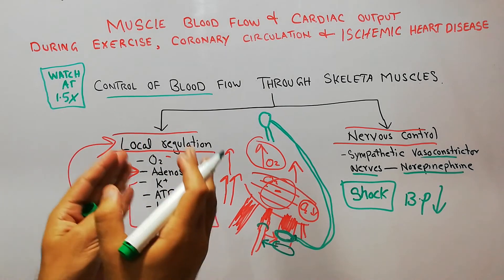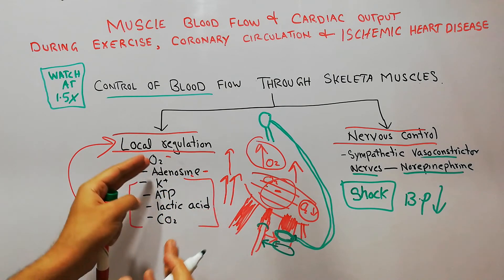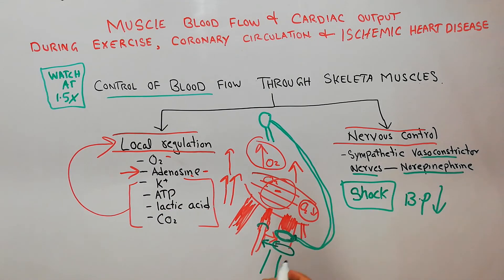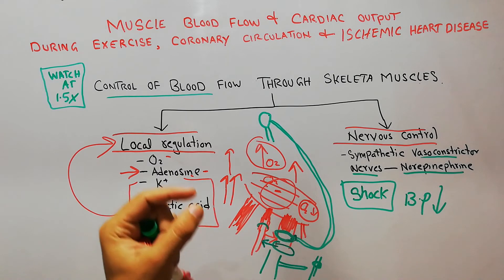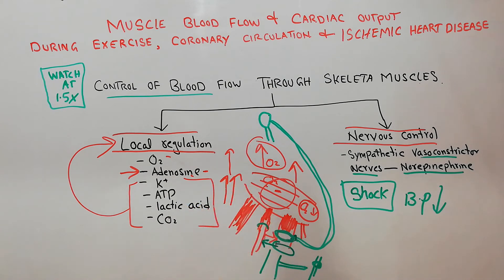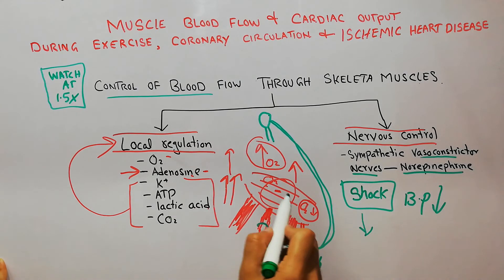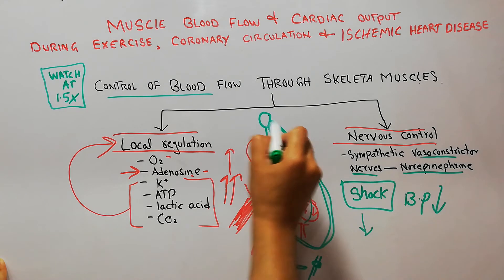Initially, during exercise, local factors such as oxygen, adenosine, potassium, and ATP caused vasodilation — they dilated the vessels. But norepinephrine constricts the blood vessels so that blood flow to muscles where it is not needed is decreased, and more blood can be diverted to the brain during shock.